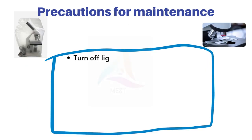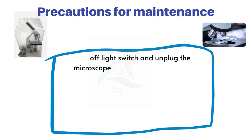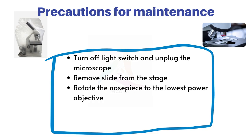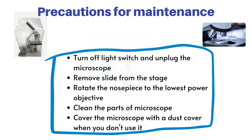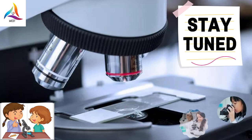After finishing observation of a specimen under the microscope, turn off the light switch and unplug the microscope. Remove the slide from the stage and put it in a proper place. Turn the nosepiece to the lowest objective lens, 4x, into position. Clean the parts of the microscope and wipe off any oil. Cover the microscope with a dust cover when you don't use it. Thank you for watching this video.